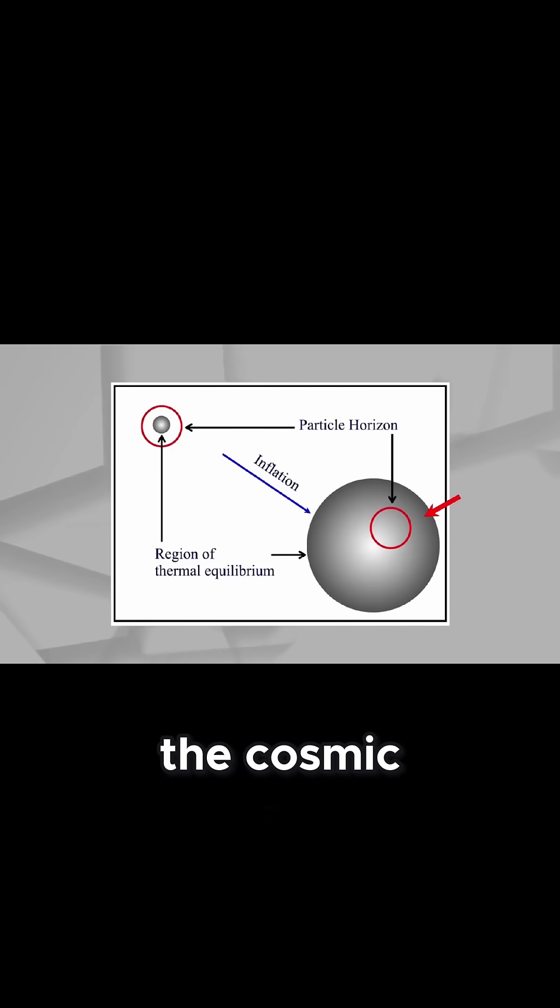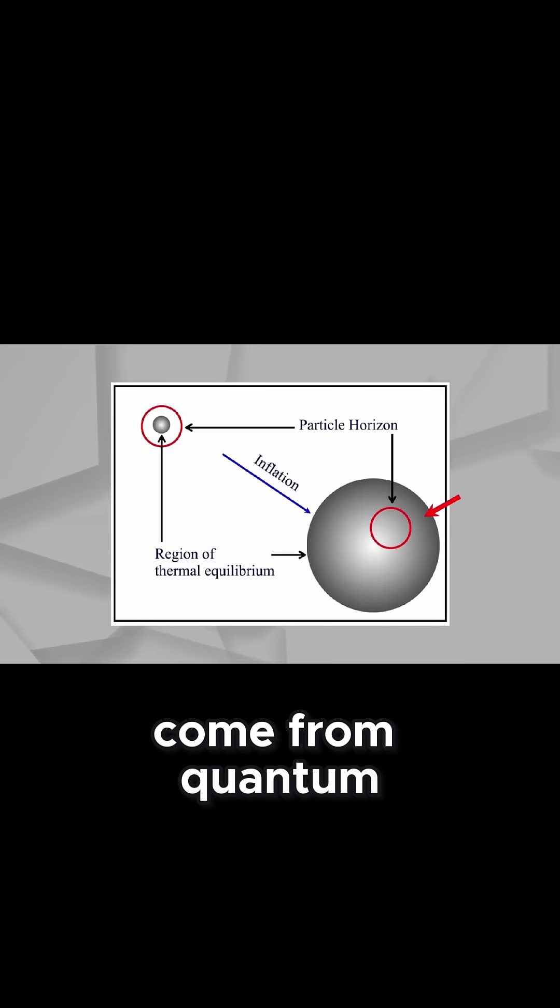The tiny variations we see in the cosmic microwave background come from quantum fluctuations stretched during inflation, leading to density variations that form the universe's structure, stars, galaxies, and galaxy clusters.